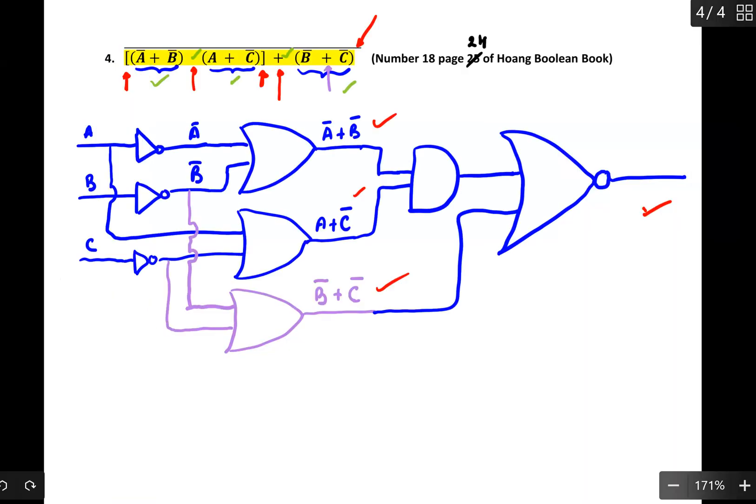In many cases, we don't need all of these gates in order to get to the signal that we want to achieve. Therefore, we need to use De Morgan's theorem and algebraic properties to simplify this expression.